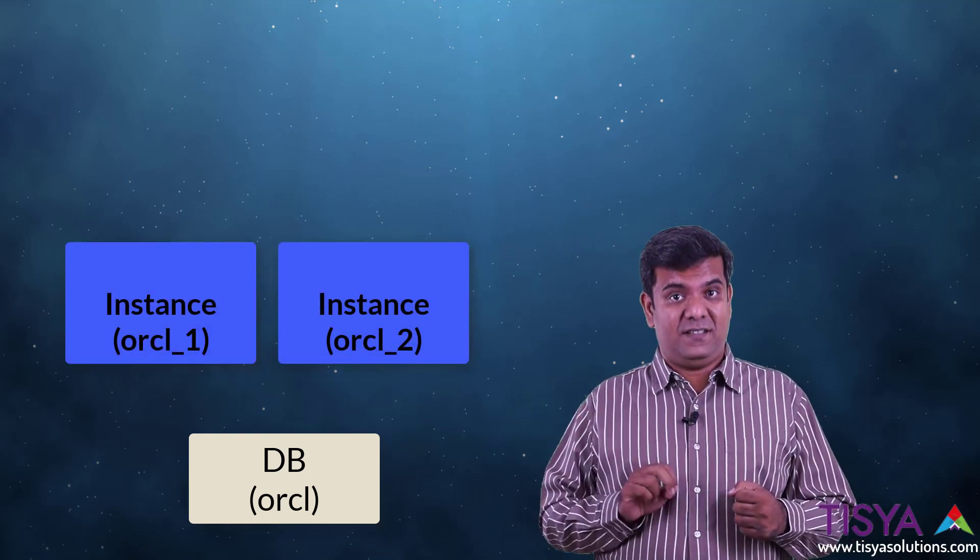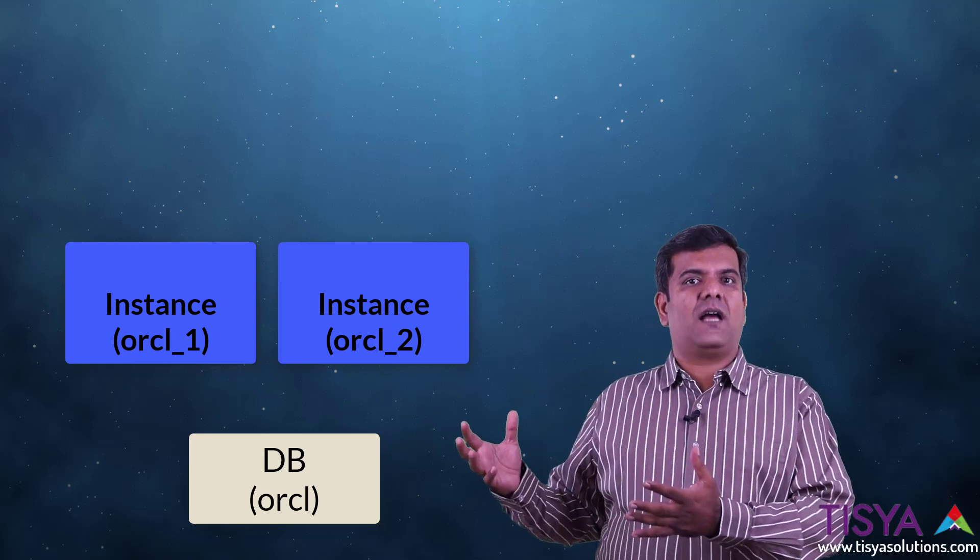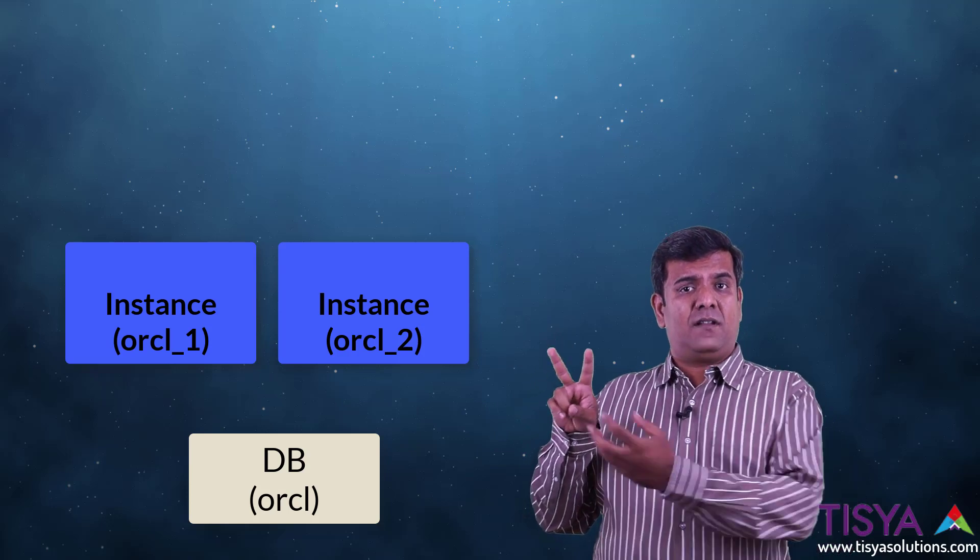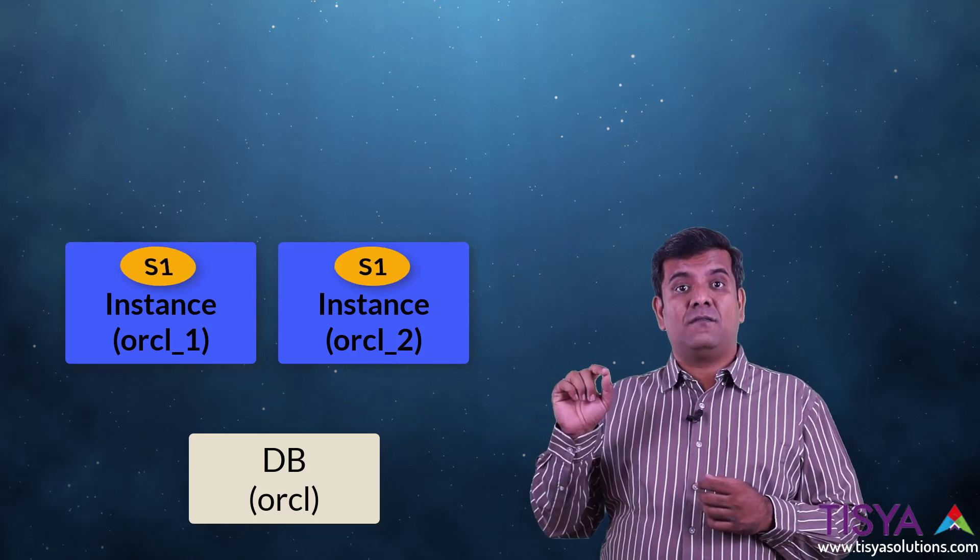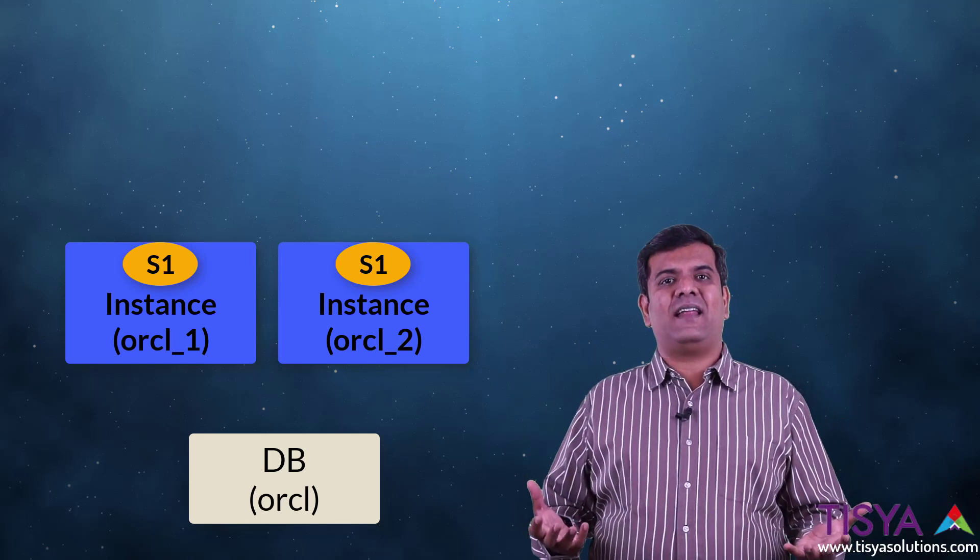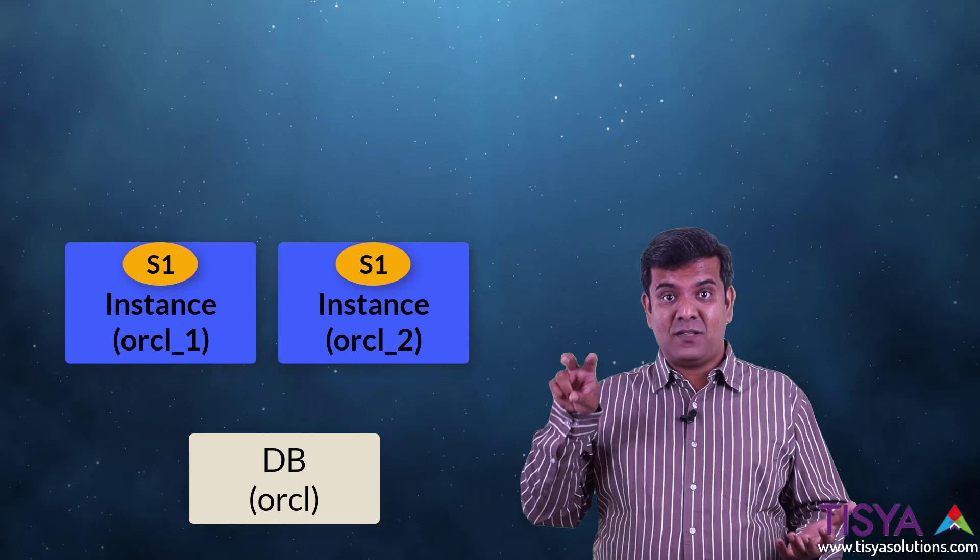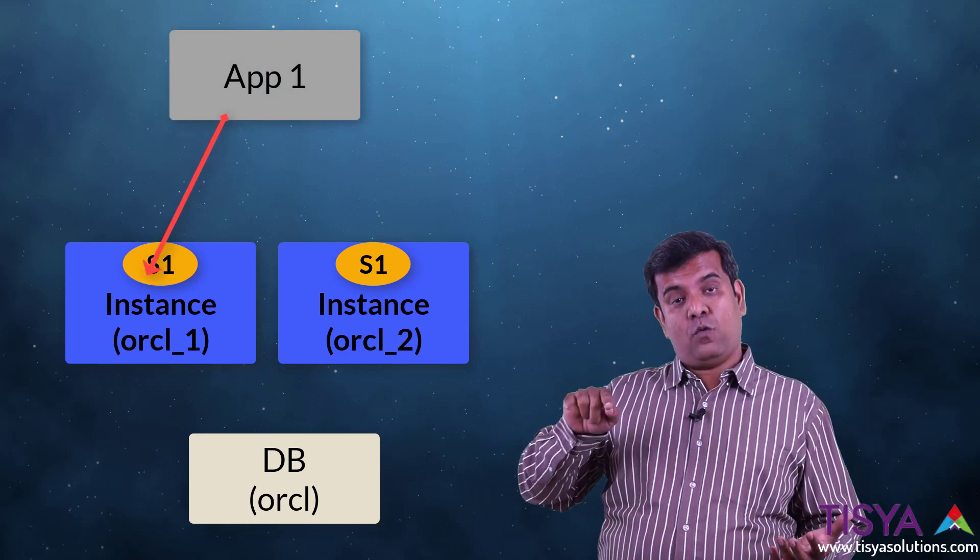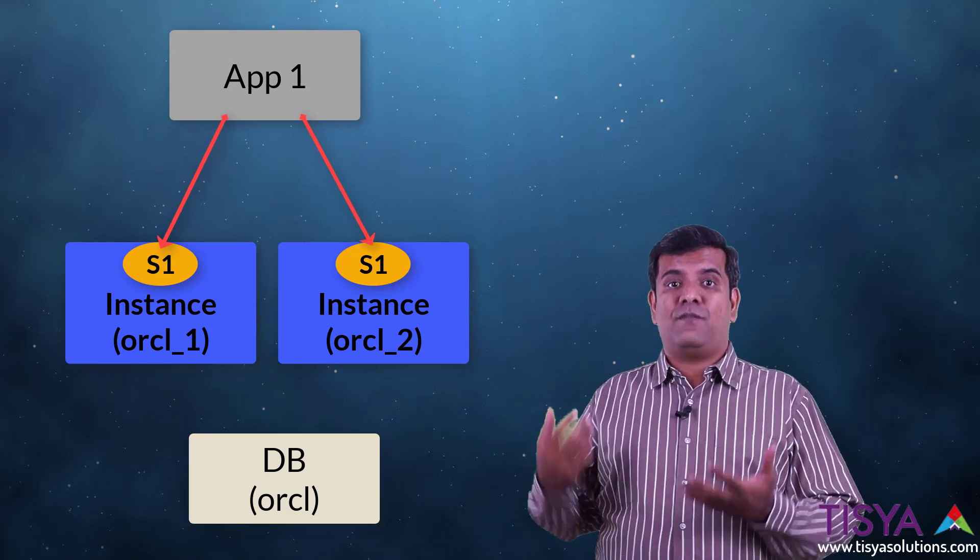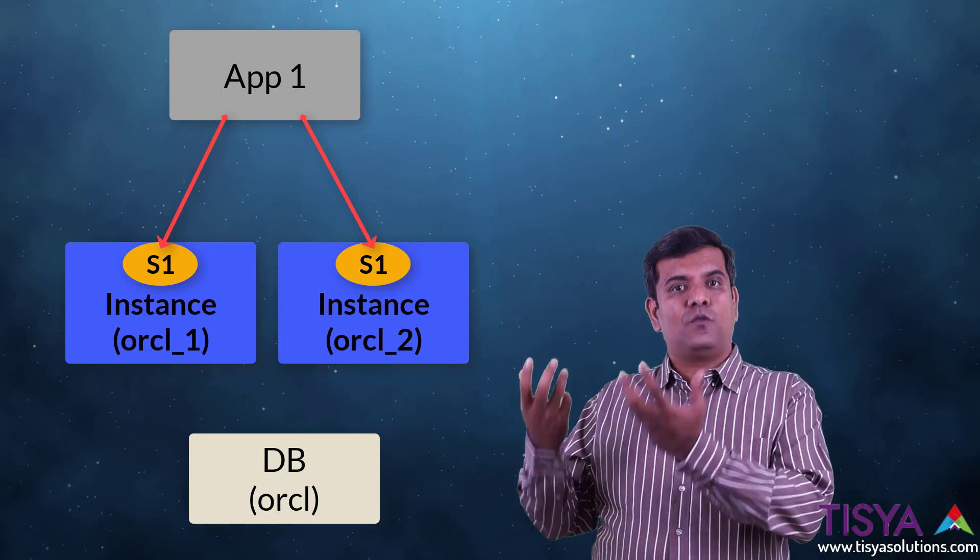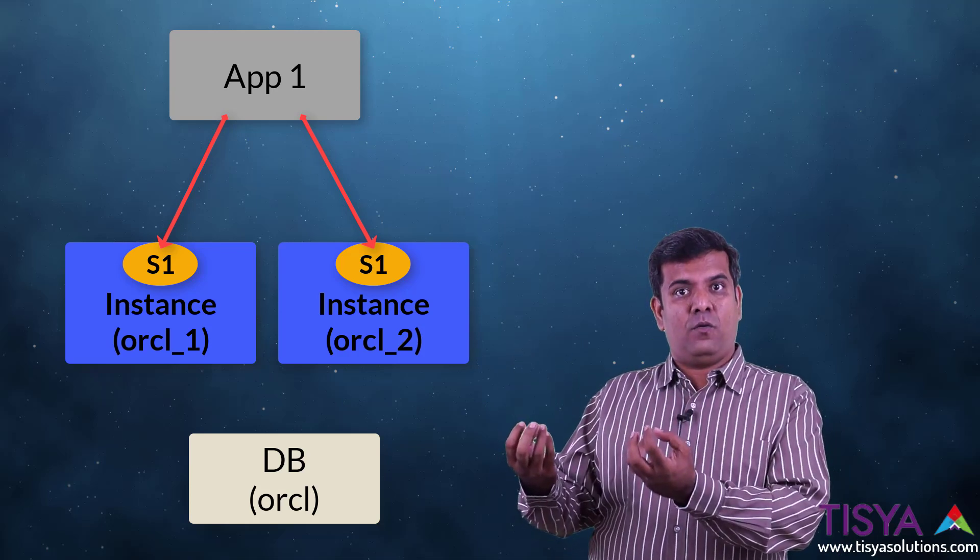Let's take a simple example where I have a two node RAC setup. I know you don't know how they've all come up so far, we will discuss about it. But let's assume you have two instances for the same database. You can create a service which can run on both instances. Thereby, you have obviously attained the ability to run the same service on two instances, which means when an application connects, it can connect to node one or node two, which finally means an application now has two database servers with two instances, one each and the same service running on both. So you have achieved scalability.